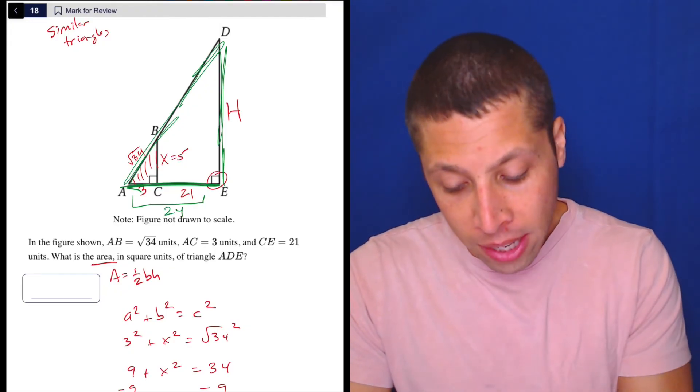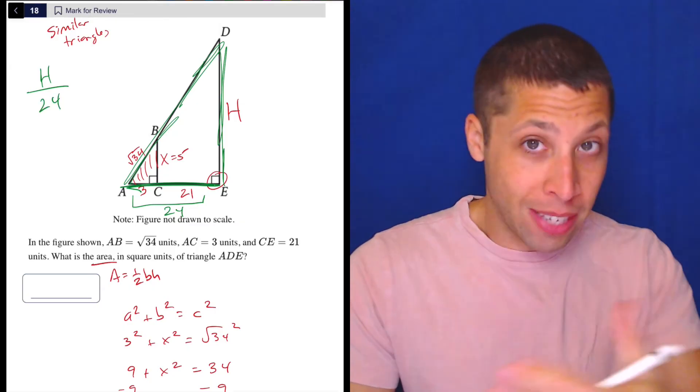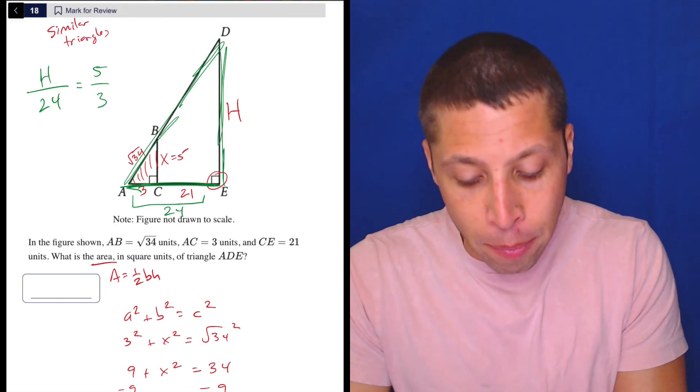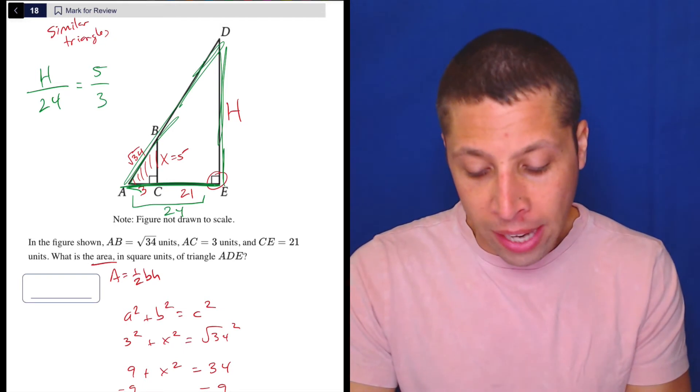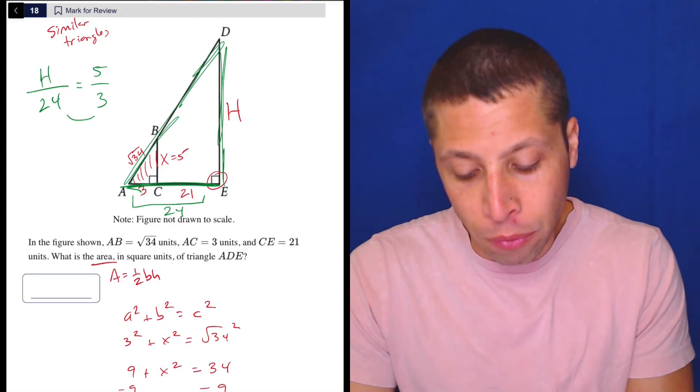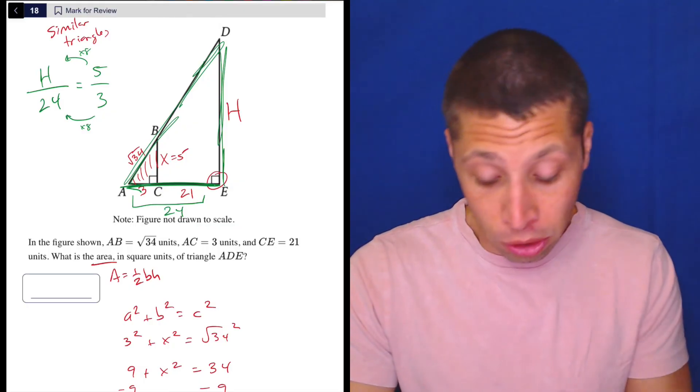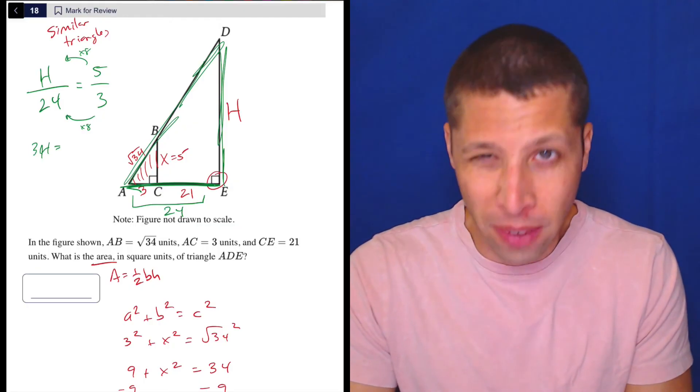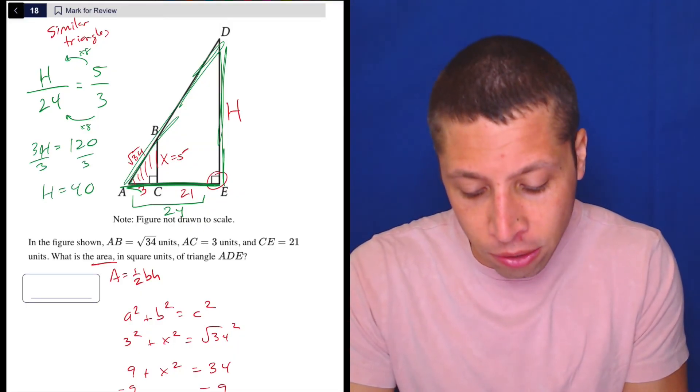So the way I would think of this is that the height and the base are in the same proportion for the big triangle as the height and the base of the small triangle. And so you might even just be able to see that we can have, in order to get from 3 to 24, we would do times 8. So we would have to do the same thing on the top to keep the proportion. If that's confusing to you, just cross-multiply. So 3H is equal to 24 times 5 is 120. Divide by 3. And H is 40.